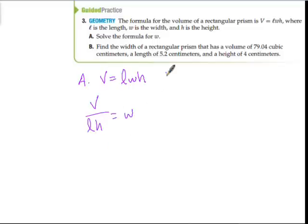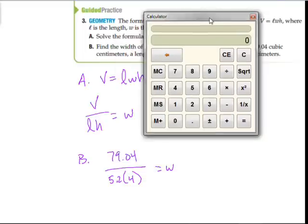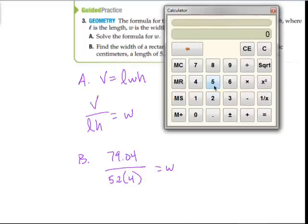Then find the width of a rectangular prism that has a volume of, so this is part B, the volume is 79.04, a length of 5.2, and a height of 4. So if I do that, I get, and that's going to equal W.